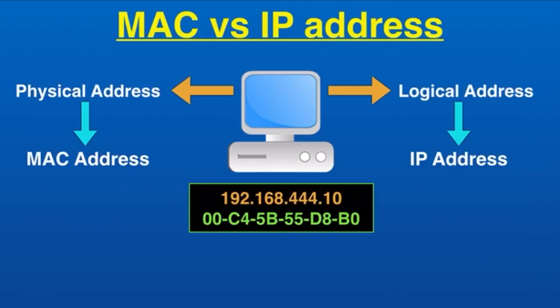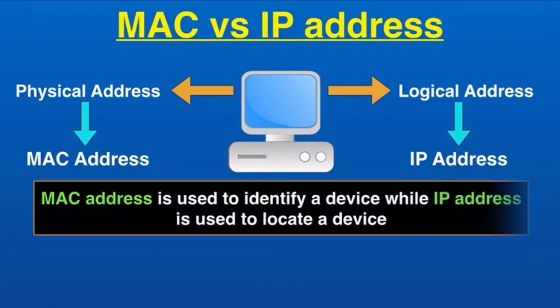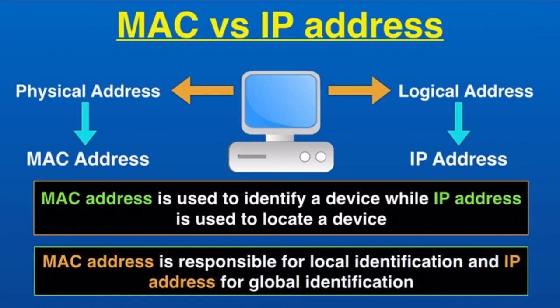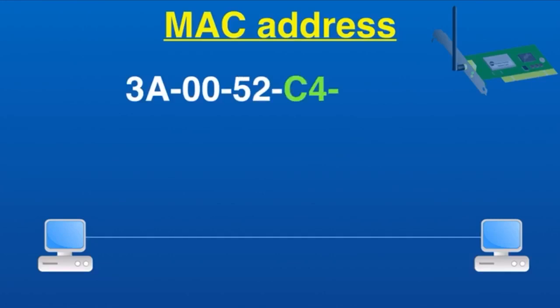The main difference between MAC address and IP address is that MAC address is used to identify a device, while IP address is used to locate a device on the network. Another major difference is that MAC address is responsible for local identification, and IP address is responsible for global identification.